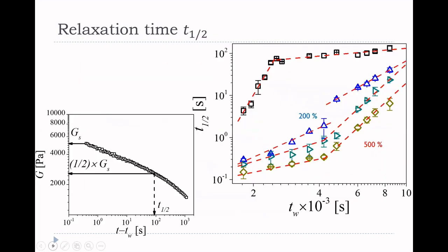We obtain a relaxation time associated with the material — specifically t-half, which is the time taken by the material to decrease the modulus to half its value. The black squares show relaxation time evolution after thermal quench: initially there is a very rapid increase in relaxation time with very high values, followed by a weak increase. For the mechanically regenerated systems, by contrast, the increase is more gradual — initially a weak increase followed by a moderately high increase. The evolution of relaxation time is thus qualitatively different in the case of mechanical regeneration compared to thermal regeneration.